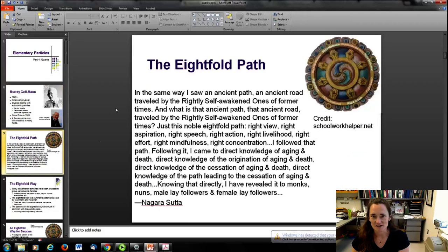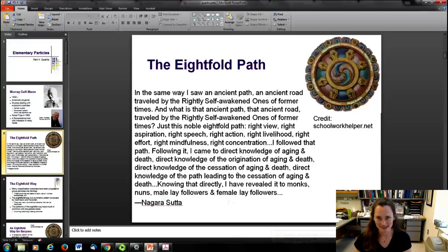In fact, the idea for the Eightfold Way, the structure which led to explaining quarks, actually came from the Eightfold Path. This is an idea from Buddhism: In the same way, I saw an ancient path, an ancient road, traveled by the rightly self-awakened ones of former times. And what is that ancient path? Just this Noble Eightfold Path: right view, right aspiration, right speech, right action, right livelihood, right effort, right mindfulness, right concentration. So it's kind of a high aspiration, I guess, but maybe this is to particle physics what the Eightfold Path is to Buddhism.